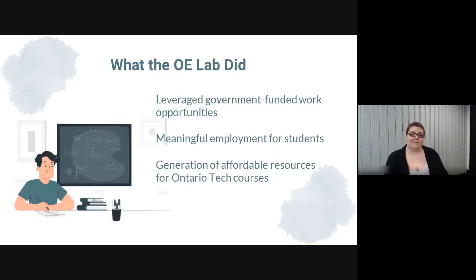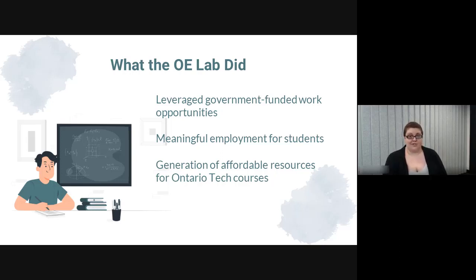Pranjal already spent some time discussing how we set up the lab as a workplace, but I'm going to highlight three of our main objectives. First, we wanted to provide paid work to our students — partially because of the makeup of the Ontario Tech student body, but also because of the context in which the lab started, which was June of 2020, three months into the COVID-19 pandemic. Our students were in a very scary situation — losing access to supports they'd been relying on, with jobs cutting staff and work placements and internships being cancelled. So we wanted to make sure students working with us were receiving financial support, which we did by employing them through the University Works program.